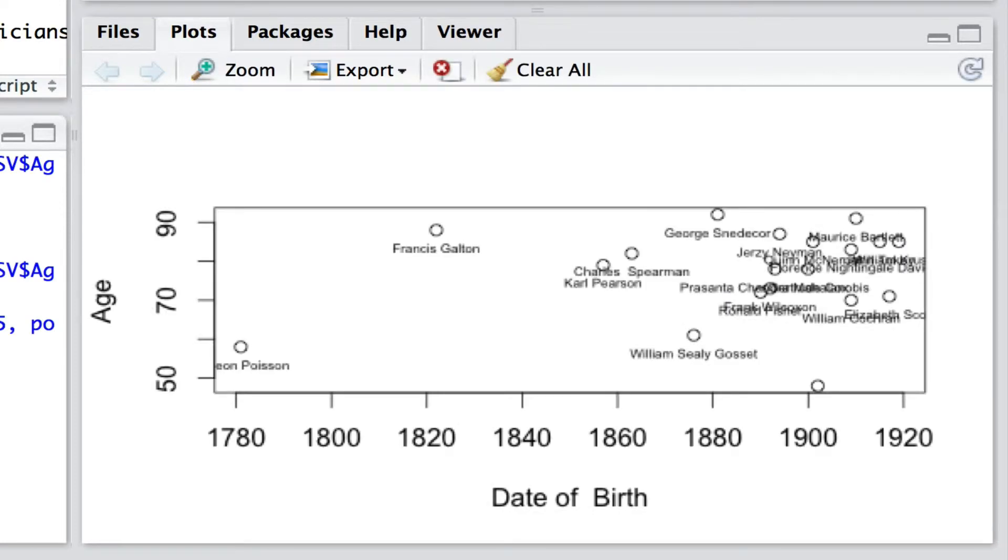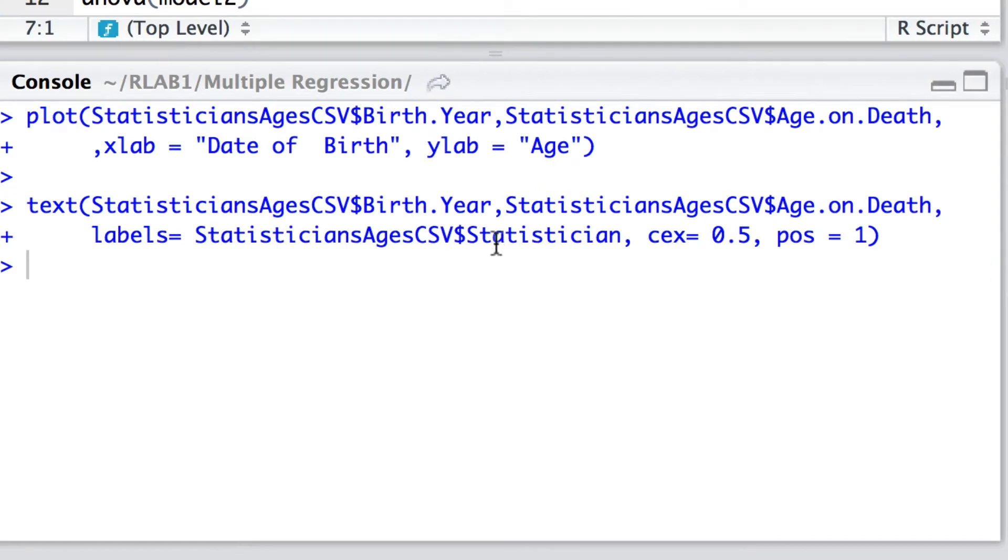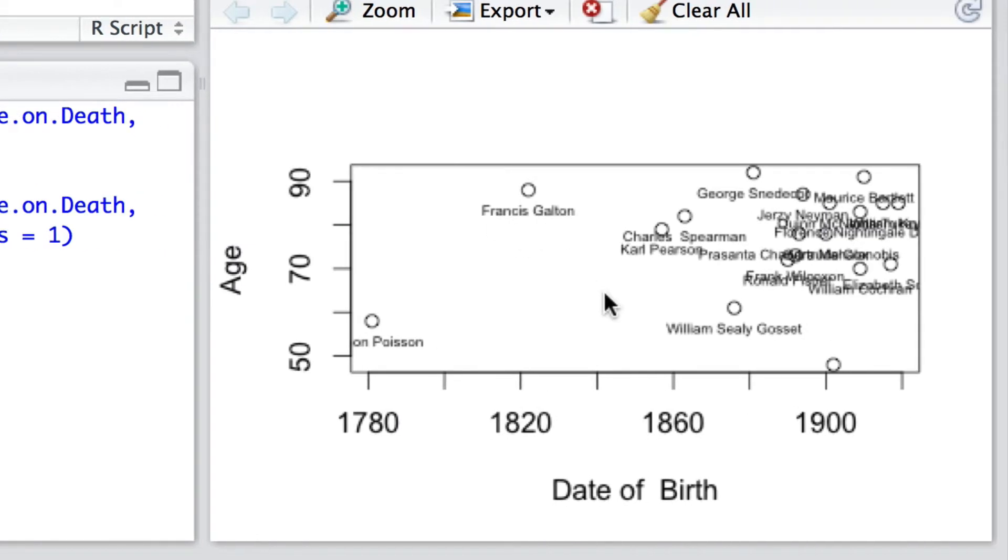Here's the date of birth of the statistician and here is the age and we've simply called up a plot using text here to give the individual titles just so that we can actually see the labels here underneath each of these points.